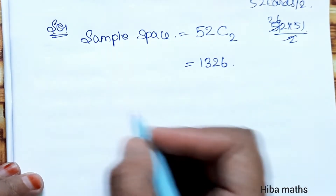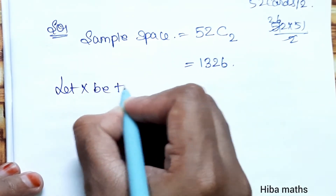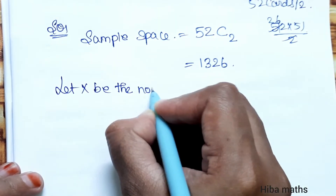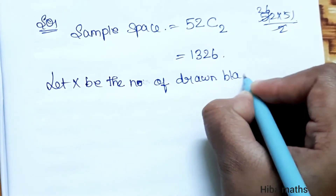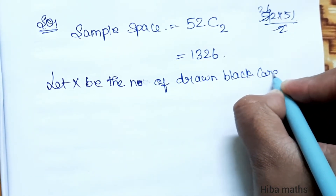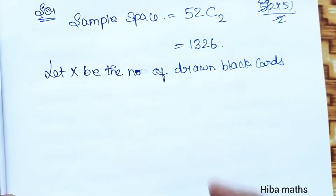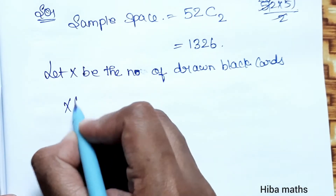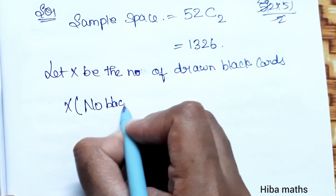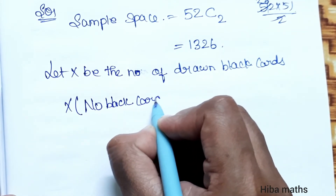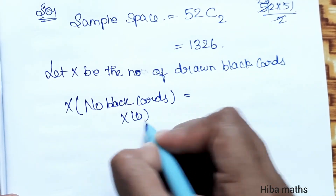Let x be the number of drawn black cards. First, x = 0 means no black cards are drawn.